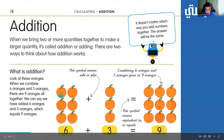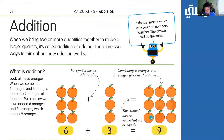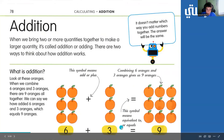So, 6 plus 3 combined equals 1, 2, 3, 4, 5, 6, 7, 8, 9, which means 6 plus 3 equals 9.